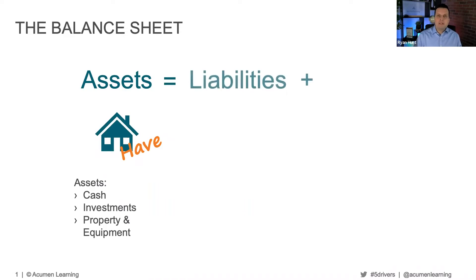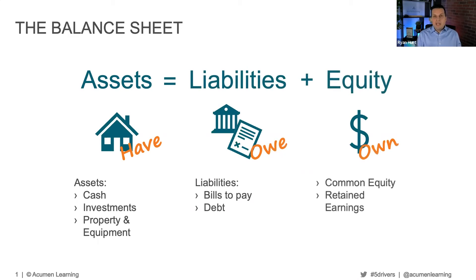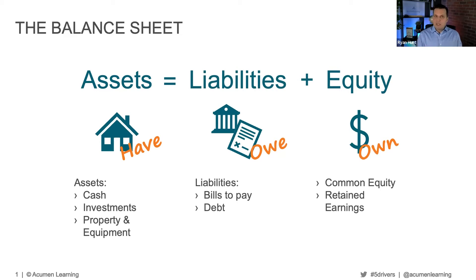Then we also have liabilities. Liabilities are things that we owe — bills that we have to pay, debt that we might have — and equity. Equity is the actual portion that we own. We may see things like shareholders' equity, common equity, retained earnings. Those are all equity. What you see on the balance sheet is: assets equals liabilities plus equity.